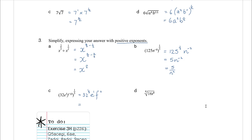Fourth root of sixteen t to the eight: that is sixteen t to the eight, all to the power of a quarter. Fourth root of sixteen is two, and t to the power of eight times a quarter is t squared, so the answer is two t squared. In summary: fractional indices represent roots — a power of a half is a square root, a power of a third is a cube root, and so on. For non-unit fractions, you split them into two separate powers; all existing index laws still apply, and you may need to add or subtract fractions when working with the exponents.